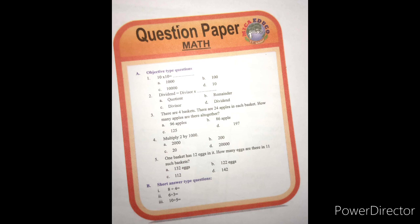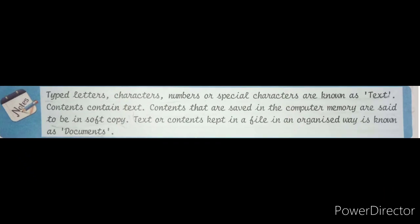We can type text and create documents easily in a computer with the help of a word processing package. A word processing package enables us to type text, make changes in the text, and save the contents. Changes means correction of mistakes, adding or removing contents. Save means keeping the records in the storage device to use the document in future, as and when required.